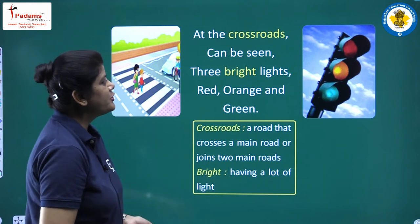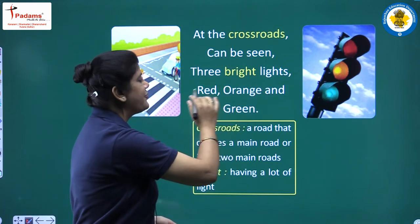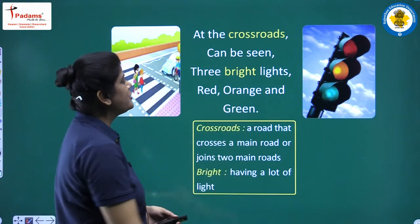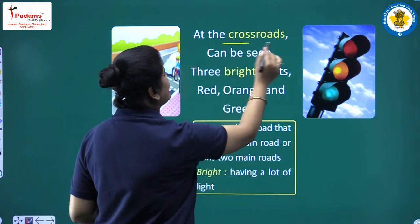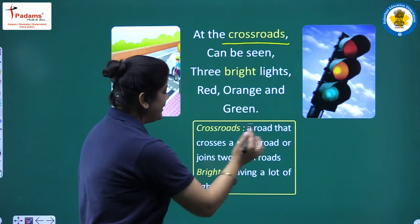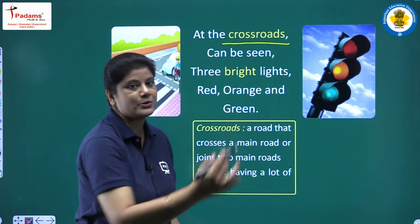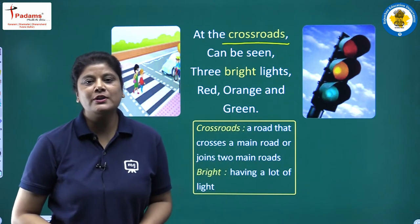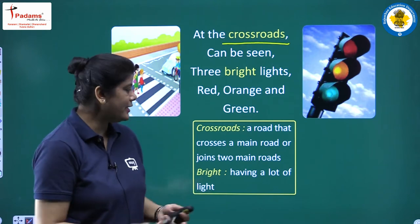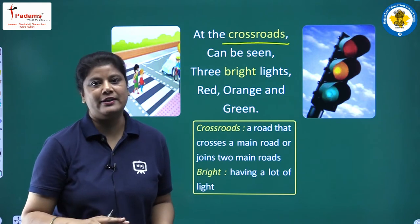At the crossroads can be seen three bright lights, red, orange and green. Crossroad — crossroad means a road that crosses the main road or joins two main roads. Crossroads क्या होती है? एसी road जो two main roads को join करती है.